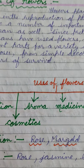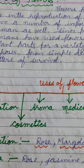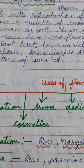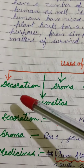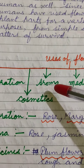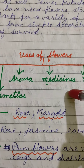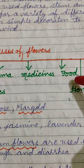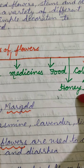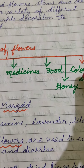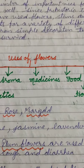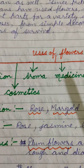Today we will discuss the uses of flowers. Flowers are used for different purposes like decoration, used in cosmetics, aroma, for making medicine, used as food, for making honey by honeybees, and they are also used for making colors and dyes. Now let us discuss these uses of flowers in detail.